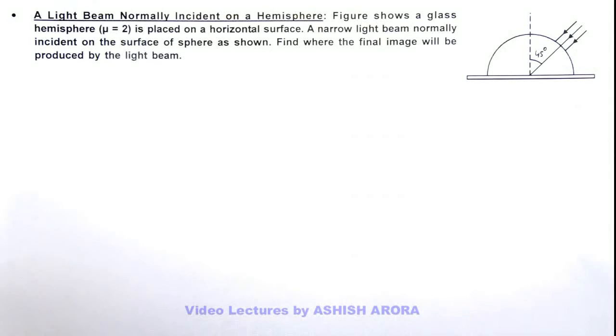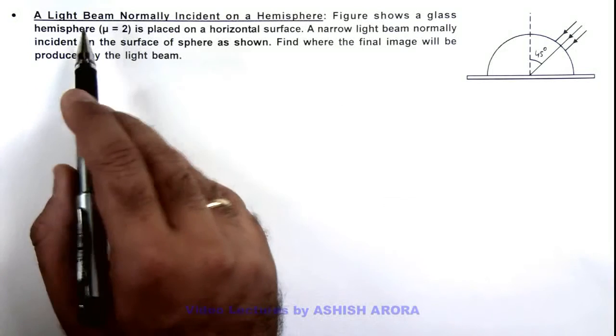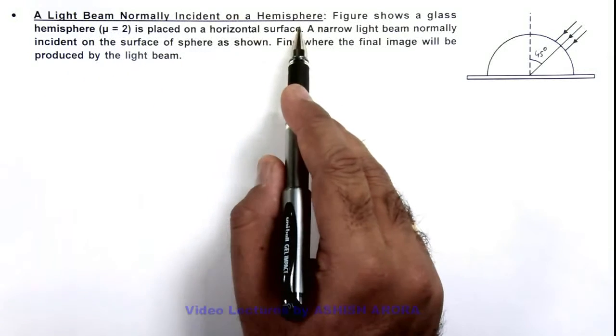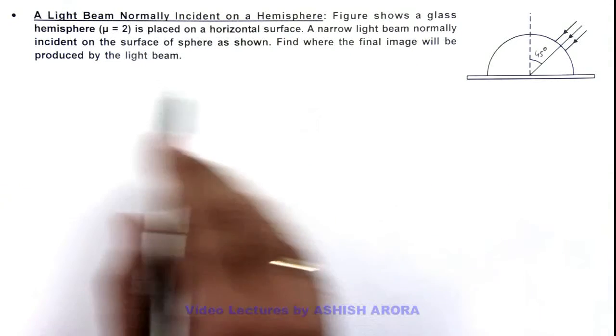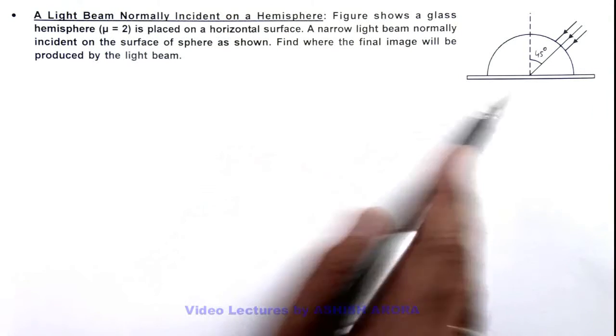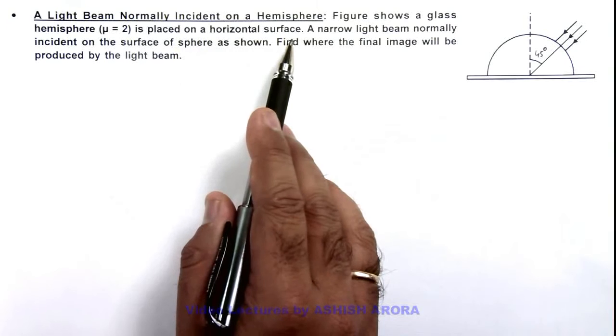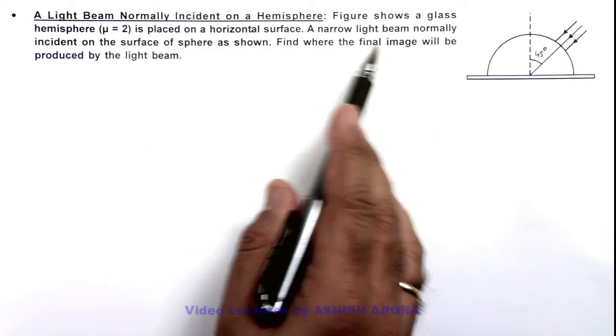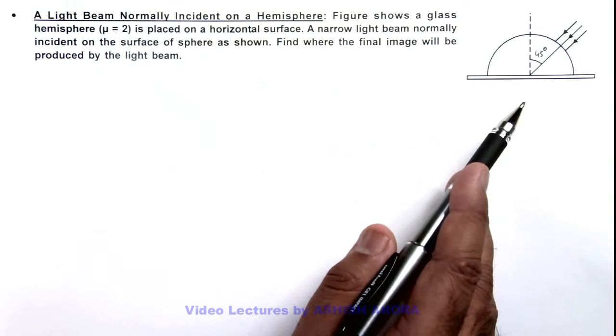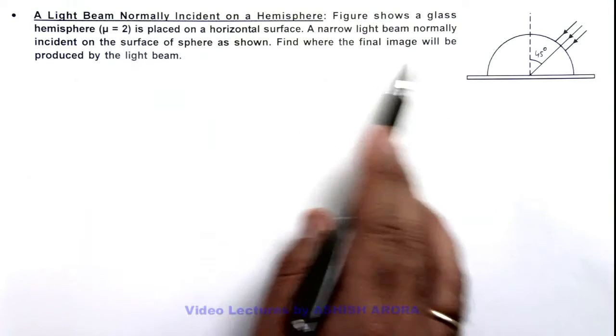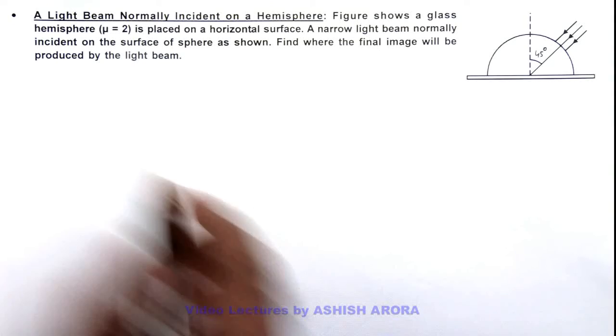In this illustration, we'll demonstrate a light beam normally incident on a hemisphere. The figure shows a glass hemisphere with refractive index 2 placed on a horizontal surface. A narrow beam of light is normally incident on the surface of the sphere as shown. We are required to find where the final image will be produced by the light beam.